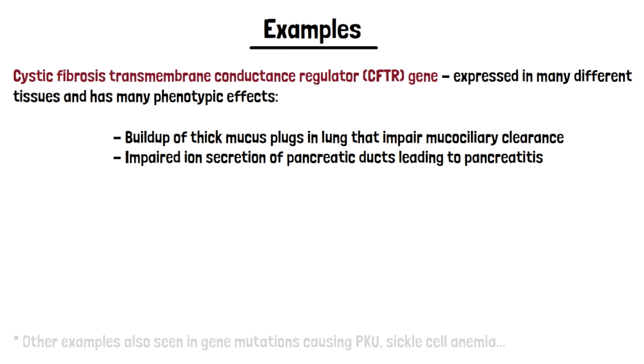Now on the other hand, this same mutation causes effects on the pancreas. In the pancreas, this impaired chloride secretion causes the ducts to be blocked off. As a result, this will cause inflammation of the pancreas and present as pancreatitis. And that's pleiotropy.